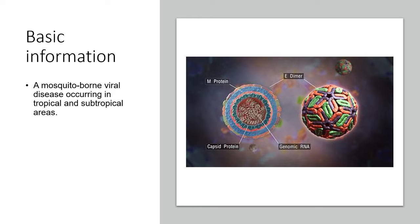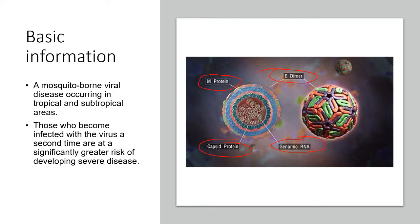You can see the overall look of this dengue virus that includes the outermost structure containing E-dimers, and it also has multiple proteins. There's an M-protein layer, a capsid protein layer, and inside of which there is a genome. Those who became infected with this virus a second time have a higher risk compared to those infecting for the first time.